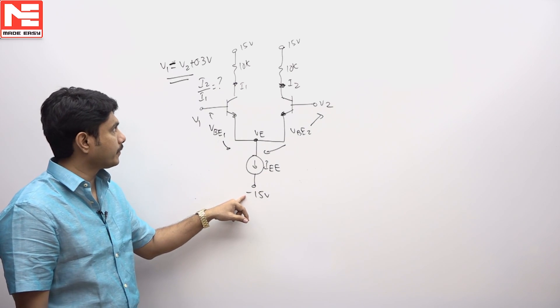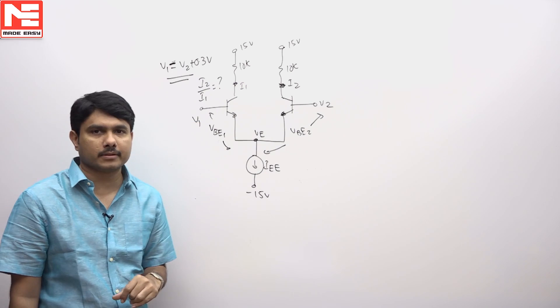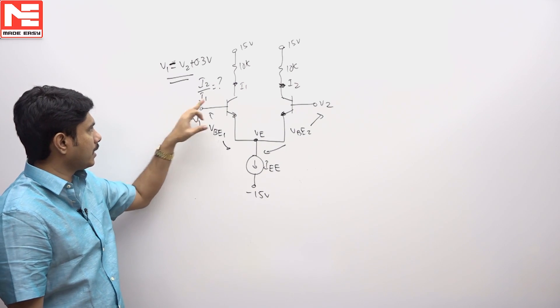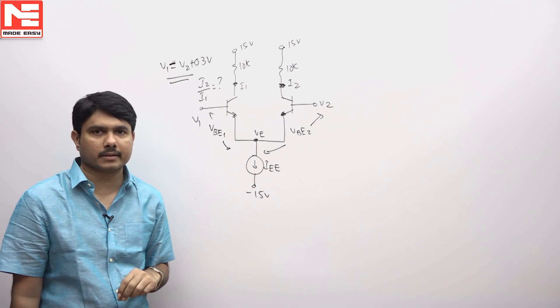This is having minus 15 volts battery, 15 volts means dual battery design. He is asking what is I2 by I1, two currents he is asking.